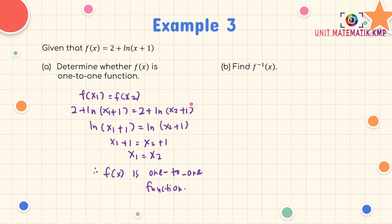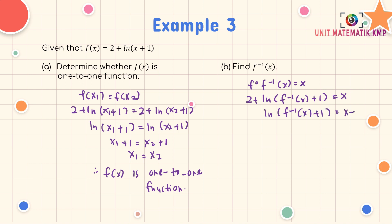For part B: find f⁻¹(x). Use f composite f⁻¹ = x. Substitute f⁻¹: 2 + ln(f⁻¹(x) + 1) = x. Change ln to exponent: f⁻¹(x) + 1 = e^(x − 2). Therefore, f⁻¹(x) = e^(x − 2) − 1.